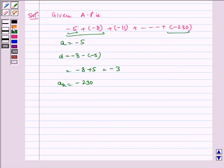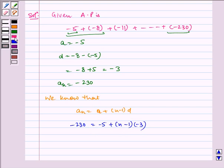Now we know that AN is equal to A plus N minus 1 D. Now here AN is equal to minus 230 which is equal to A is minus 5 plus N is unknown and D is minus 3. Now solving this for N.